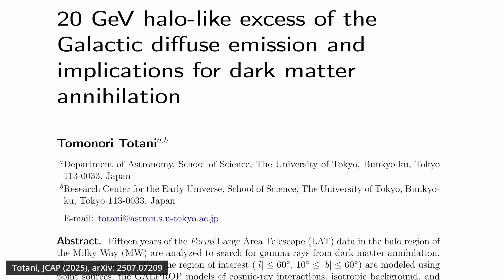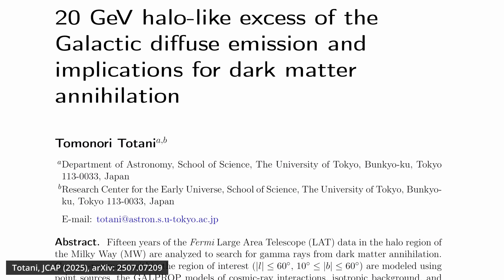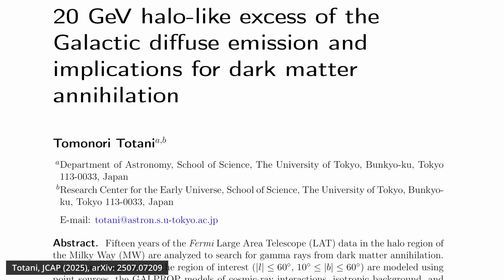This dark matter isn't evenly distributed. It sits around us in a big spherical halo that has a higher density towards the center of the galaxy. The author of the new paper says that he's found evidence for this dark matter halo in the Milky Way.